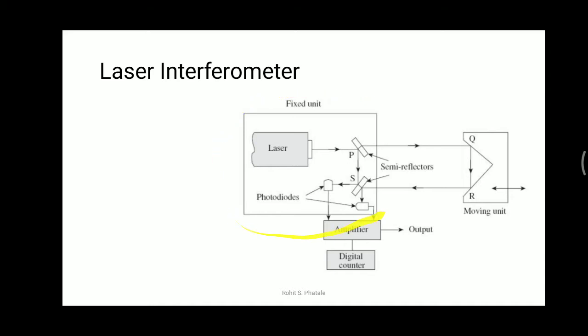There is a fixed unit and a moving unit. The moving unit is a cube — a rectangular block cut into a triangular shape — known as the corner cube. A number of semi-reflectors and photo diodes are installed, and two inputs are given to an amplifier which provides a digital output.